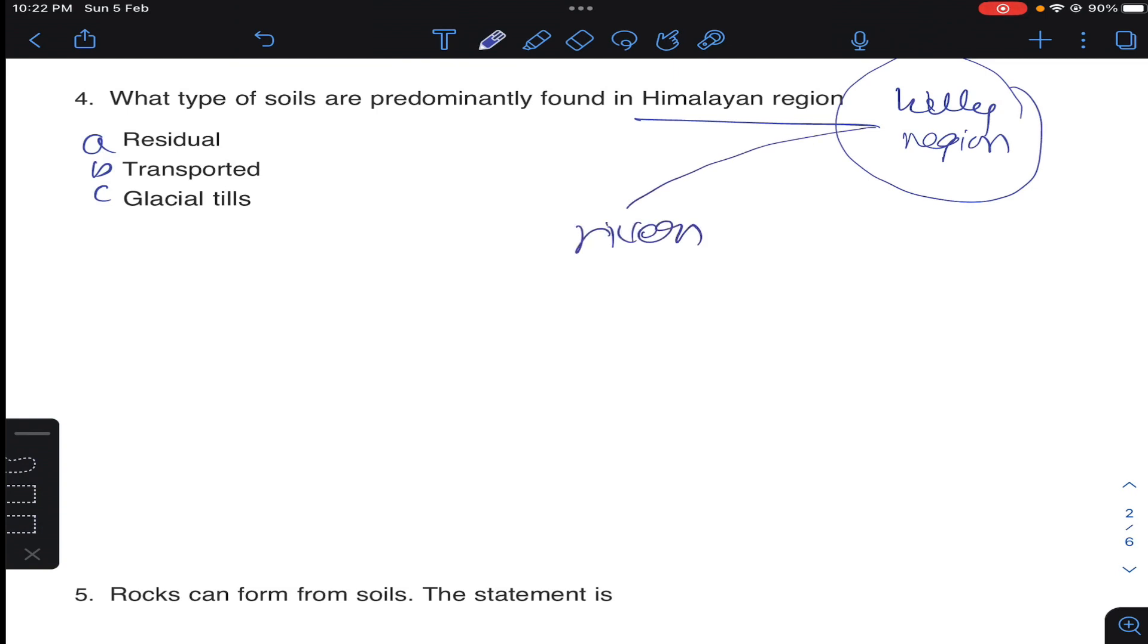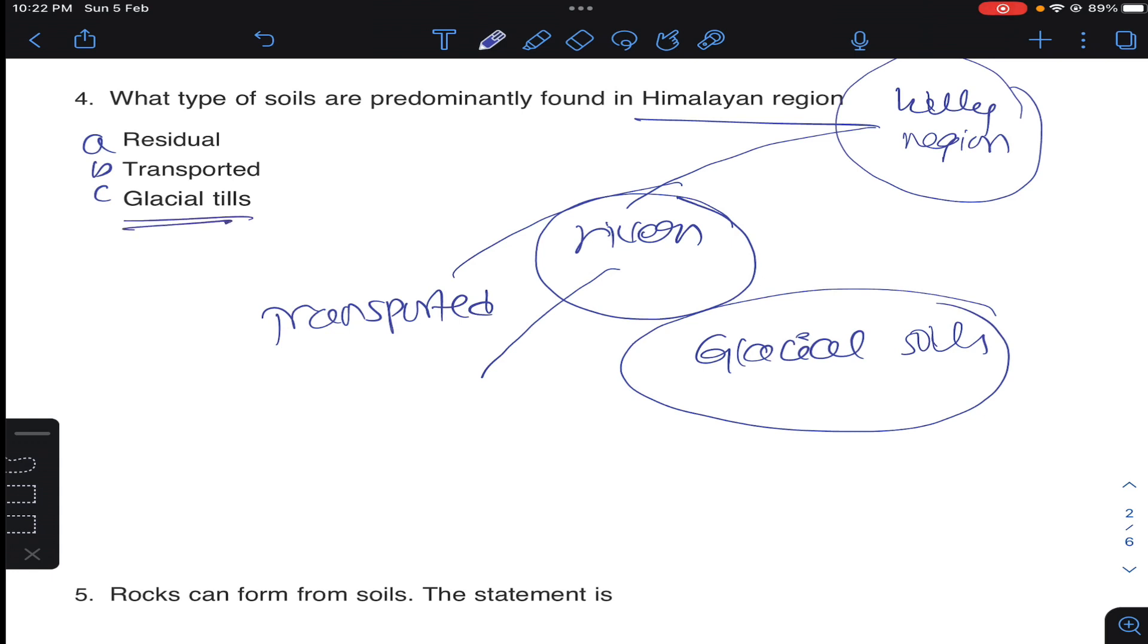So all the soils formed from Himalayas are transported to some other locations, transported by river water or ice, generally ice. Glacial soils are formed in Himalayan region because of ice, so answer C for question number four - glacial soils.